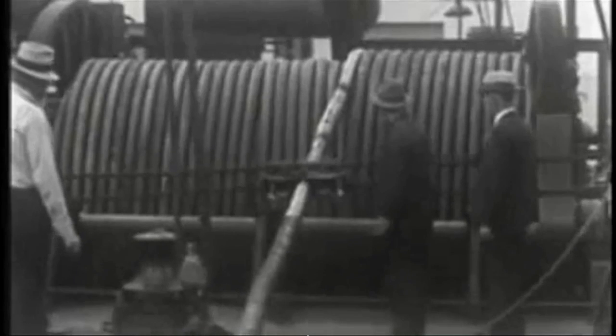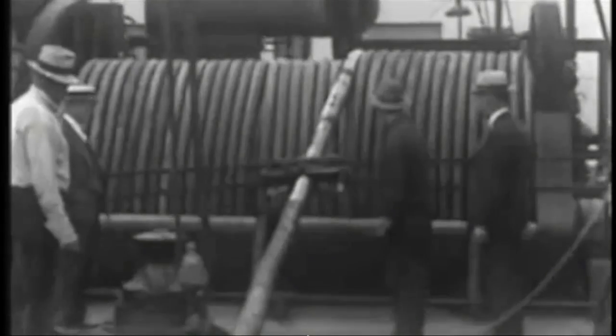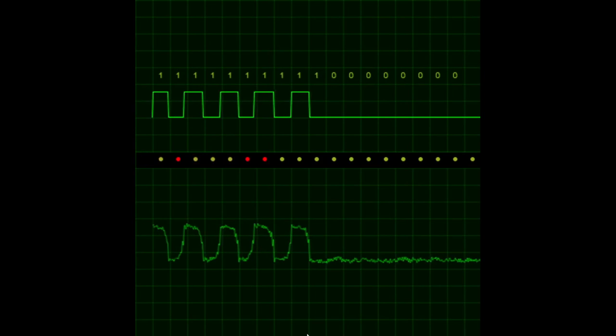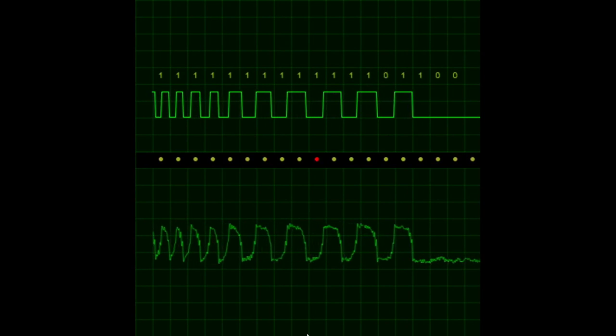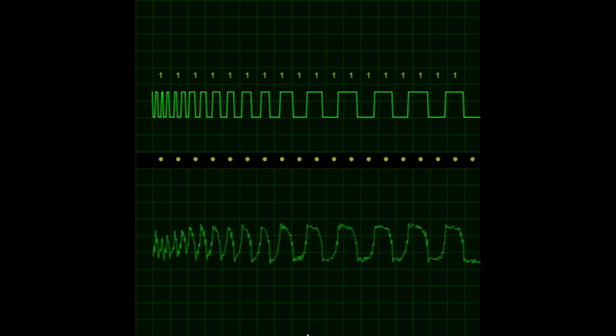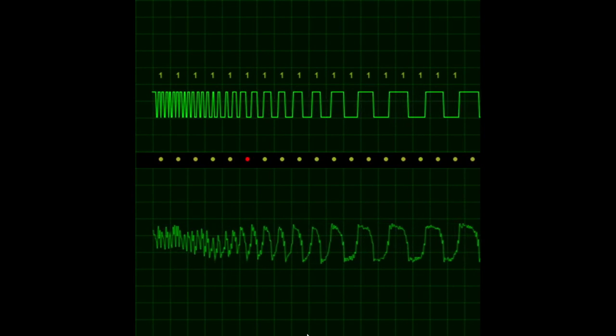And this problem plagued engineers who were testing underground submarine cables using the existing Morse code system. And it's similar to an echo or a sustained note. If one sends dots too fast over a long undersea circuit, they will run together at the receiving end.